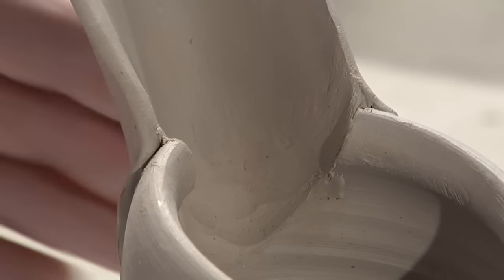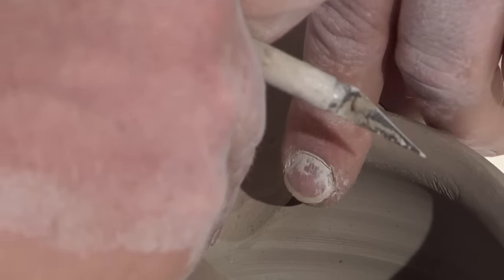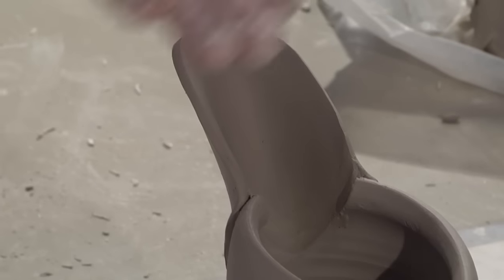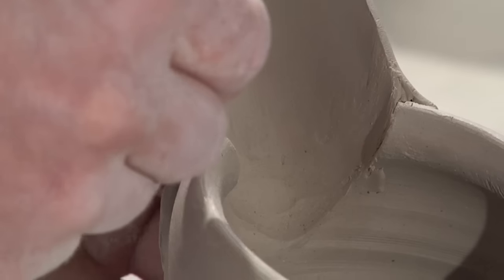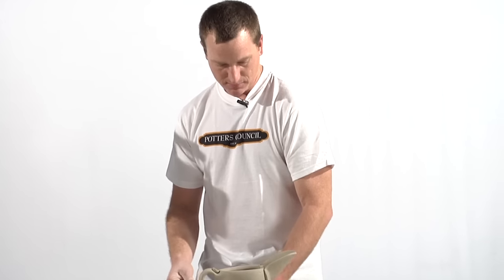And the last part of this is this little seam here on the top bothers me, because this slab originally started out flat so it's going to want to return to its flat position when it fires. So I'm going to go ahead and put a little element in here that spans the gap between the spout and the body of the pitcher.